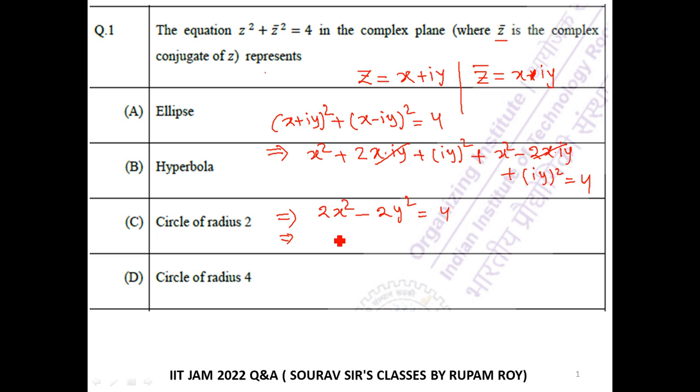So iy whole squared, that will be minus twice y squared, that is equal to 4. So x squared minus y squared, 2 common, that is equal to 4. x squared minus y squared that is equal to 4 by 2, that is 2.